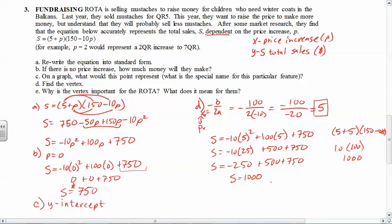The graph and all the values associated with it should be exactly the same. So we found the vertex, the vertex is 5 comma 1000. Now letter E essentially asks what does this mean, why is this important for ROTA? Well, the vertex remember is either the highest or lowest point. Now if we look at standard form, we notice that there's a negative in front of the P squared. That negative, if you have a negative outside of the function, that actually causes a vertical flip. So our graph is going to actually be a parabola, but it's going to be upside down, which in this case means that the vertex is going to be the maximum.